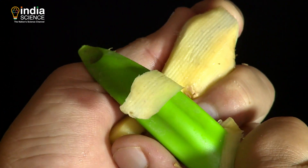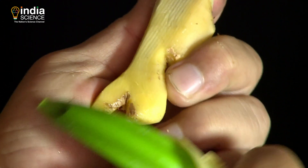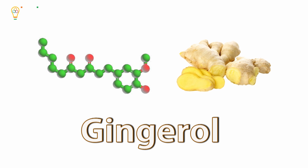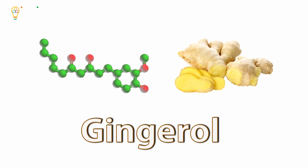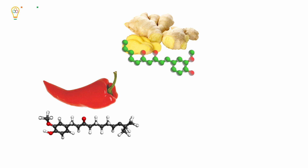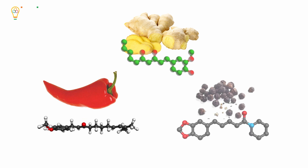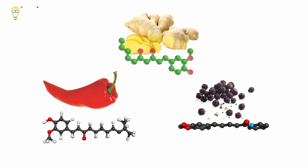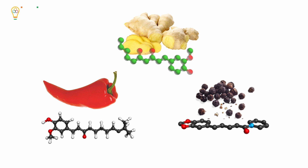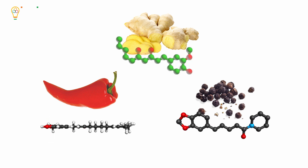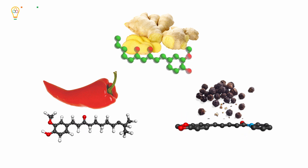The main bioactive molecule in fresh ginger is gingerol. Gingerol is chemically very similar to capsaicin in chili and piperine in pepper — three different molecules that give three pungent spices their unique properties.